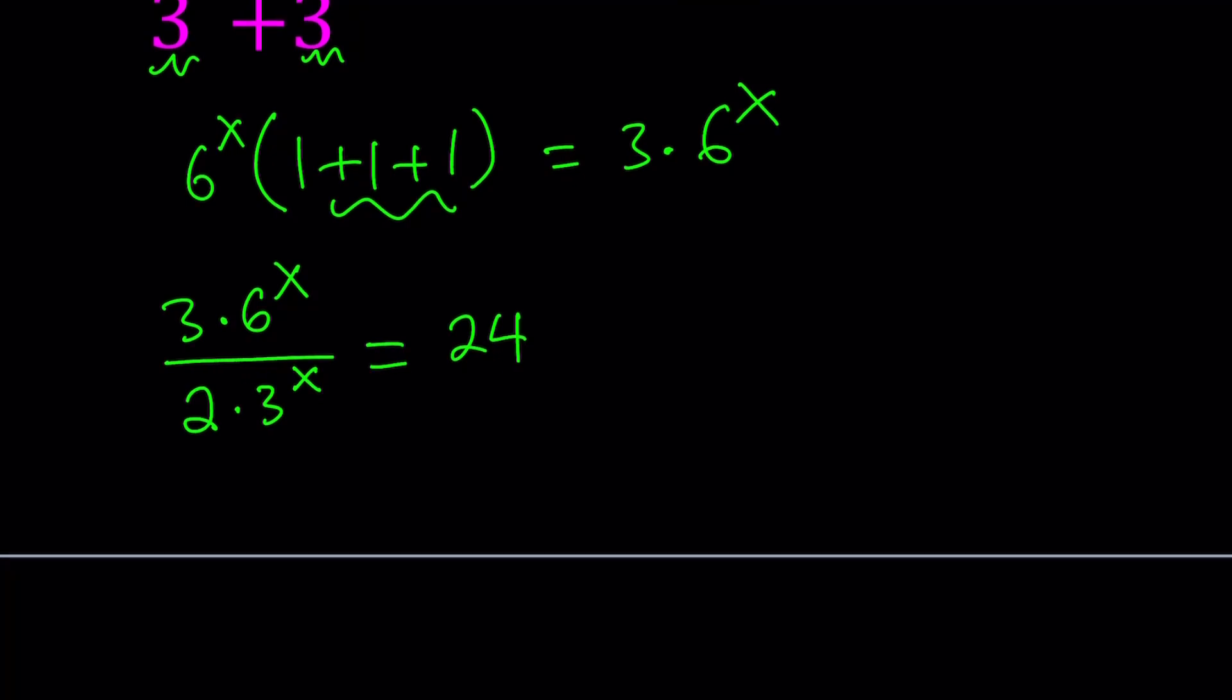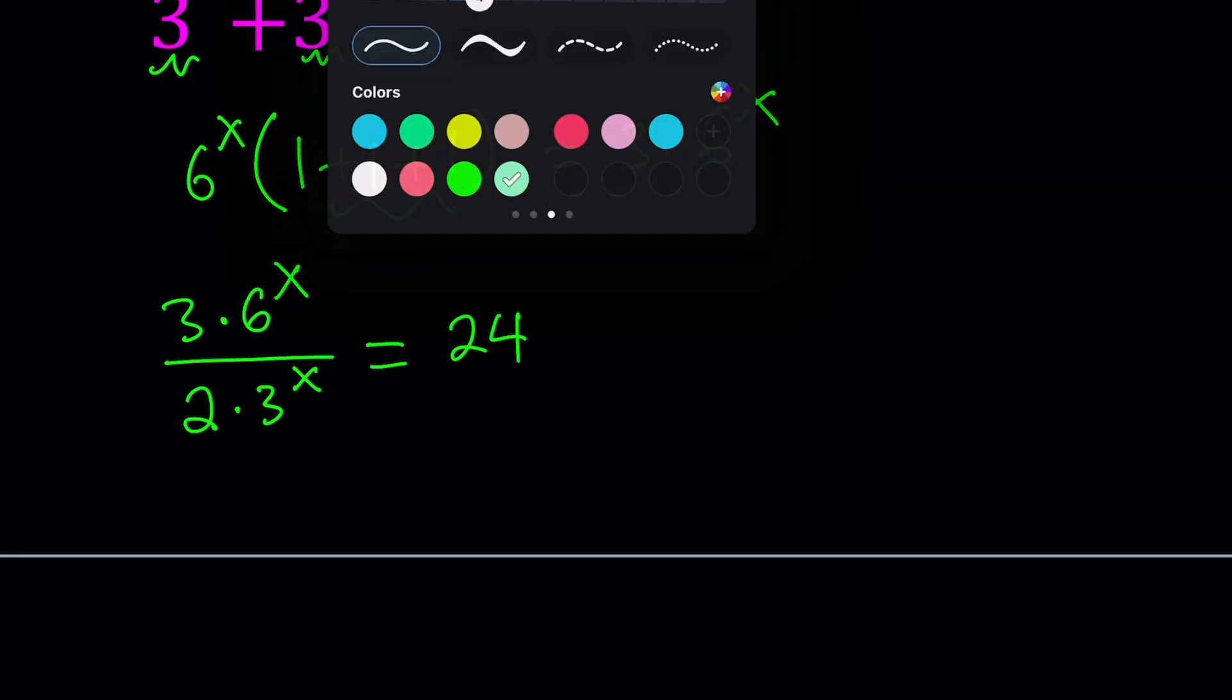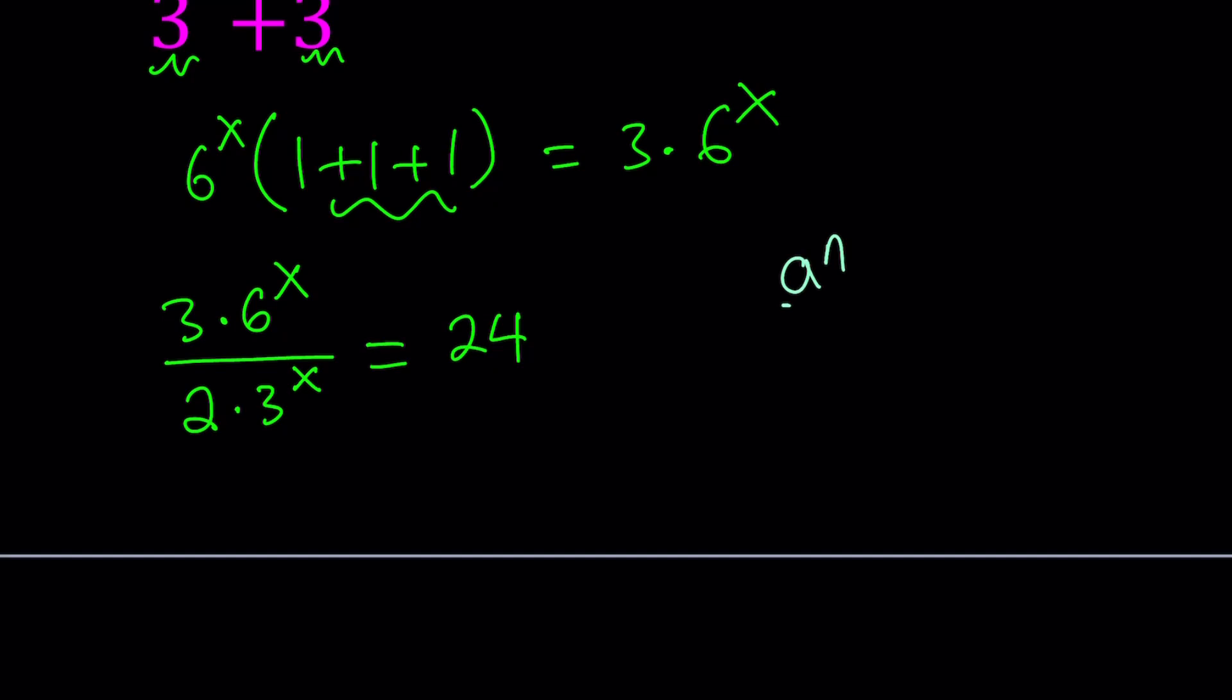The next step is simplifying this. We can cross cancel or cross multiply, but one thing to keep in mind is we're dividing two exponentials. We're going to use another property here: if you have a^n divided by b^n, that can be written as (a/b)^n. We use a common exponent and divide the bases. That'll take care of this part; we just have to take care of the numbers.